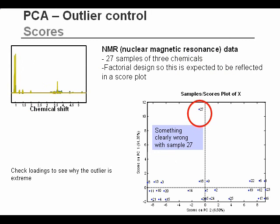Here's an example: a dataset of nuclear magnetic resonance data with 27 samples, each containing different concentrations of three different chemicals, made according to a factorial design. We expect this factorial design to be reflected in the score plot. But if you look at sample 27 in the score plot, you see it is positioned in a very awkward place compared to all the others. The other ones seem to reflect the factorial design, but sample 27 is clearly different — a good example of an outlier. By looking into the model and the raw data, we might be able to detect what is wrong with that sample.